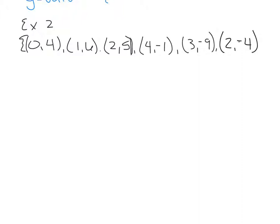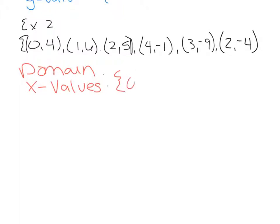Example 2 asks us to do the same thing with a new relation. The domain is the set of x values — just identifying the x coordinate for all of these ordered pairs. That will be 0, 1, 2, 4, 3. The last ordered pair has x = 2, but we already have a 2, so we don't need to list it twice.